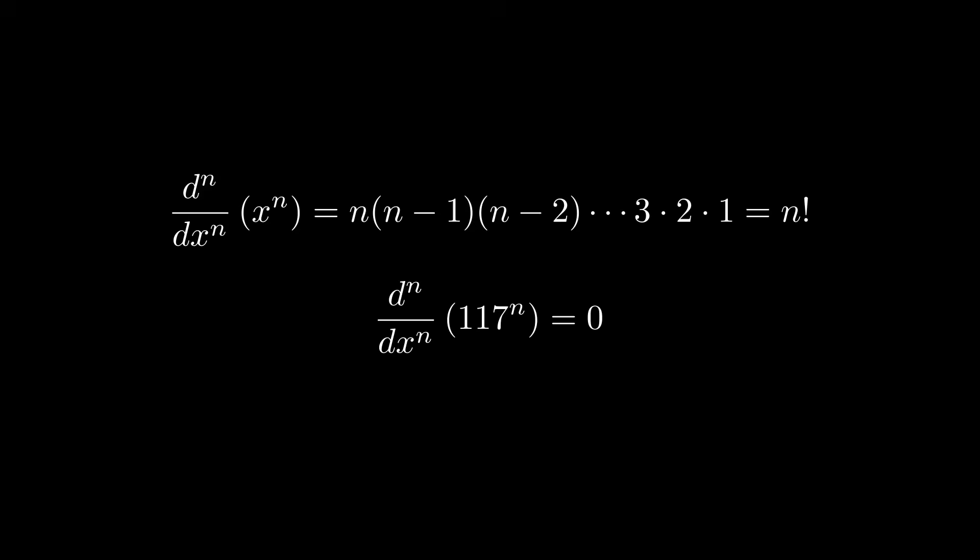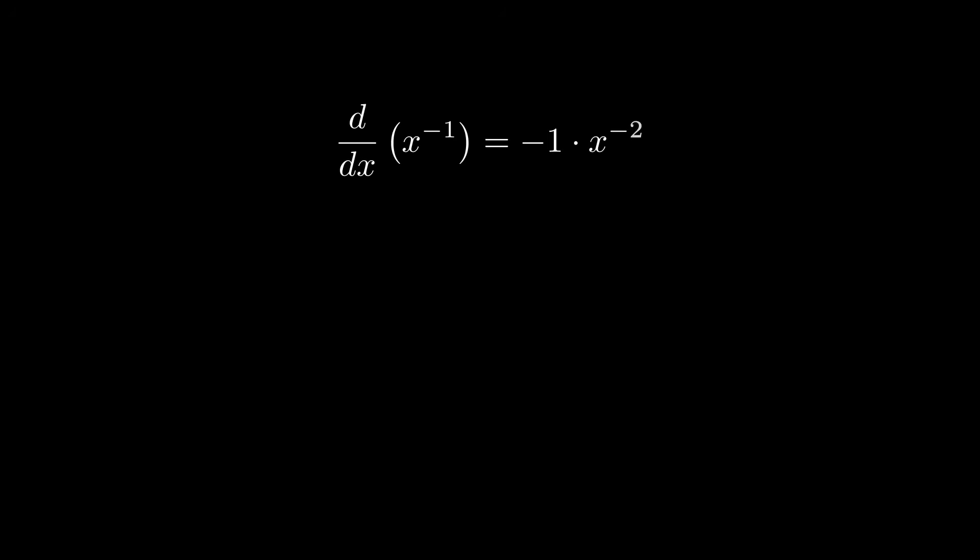It would be nice if the thing that we were deriving created factorials like we want, but also didn't disappear. I want something to remain that I can substitute values into and generate new factorials. Now, probably in the same lesson you learned the power rule, you probably also did derivatives with negative exponents. And one of the properties of deriving a power function with a negative exponent is that it never really disappears regardless of how many derivatives you take.